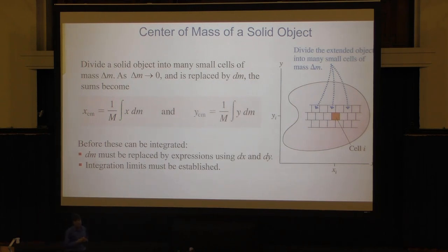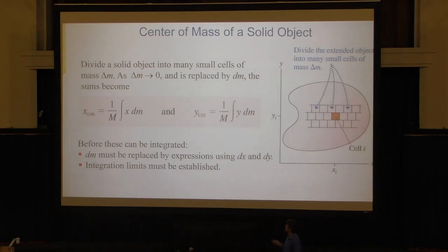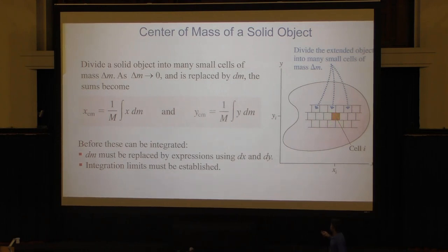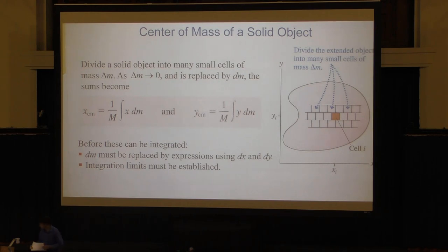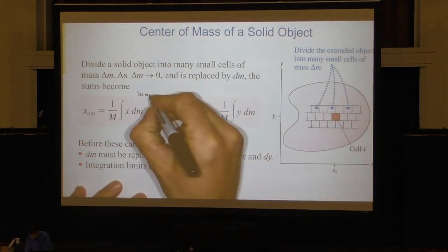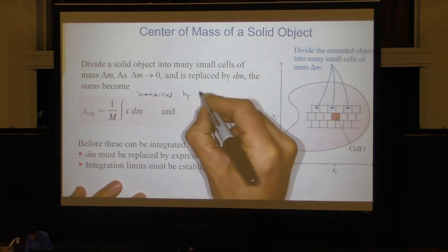The integral of x times dm: x is the position, dm is an infinitesimal little mass that you figure out from volume or area times density. We usually do this in 2D, so each little cell dm has an area and a little mass dm, and you divide by the total mass but integrate instead of summing. Integration limits must be established to cover the whole object. These are the main equations summarized in your textbook as Equation 9.4.